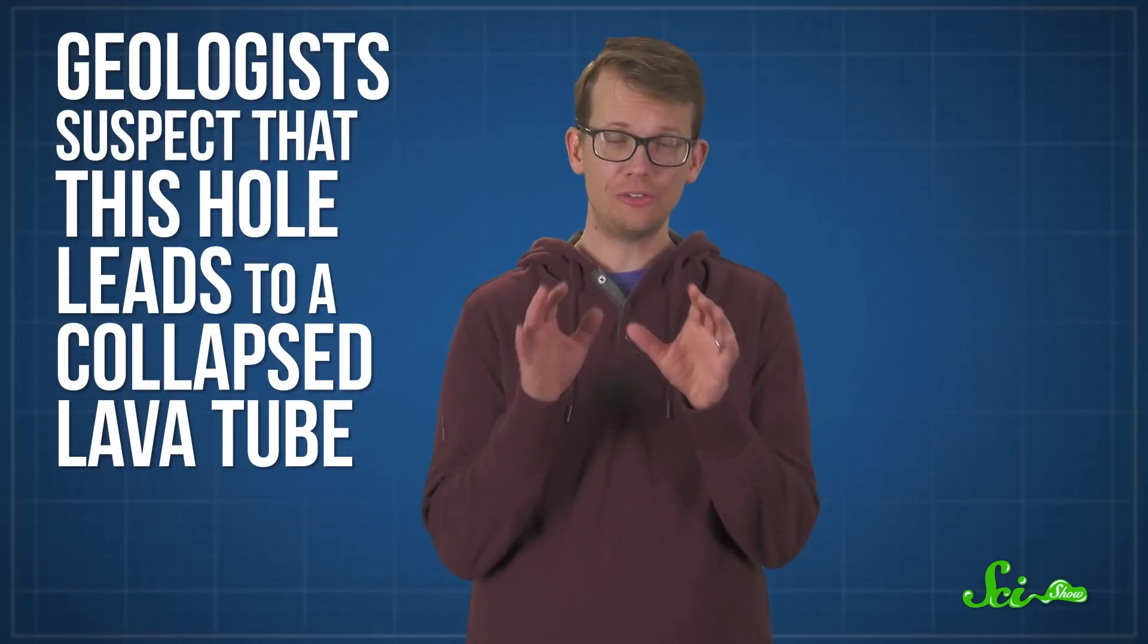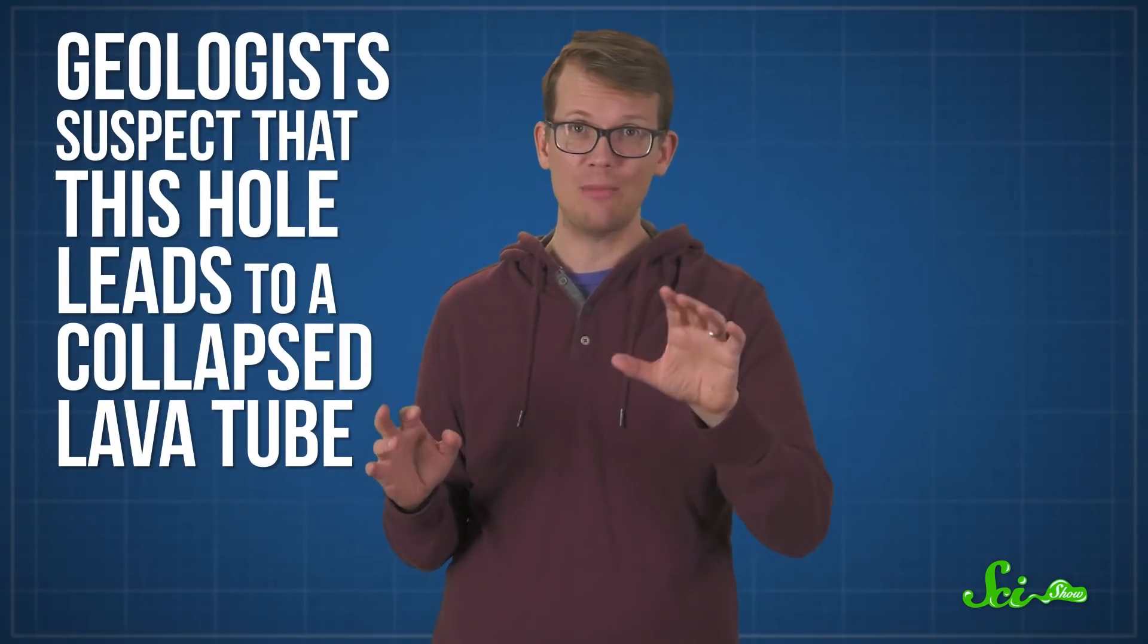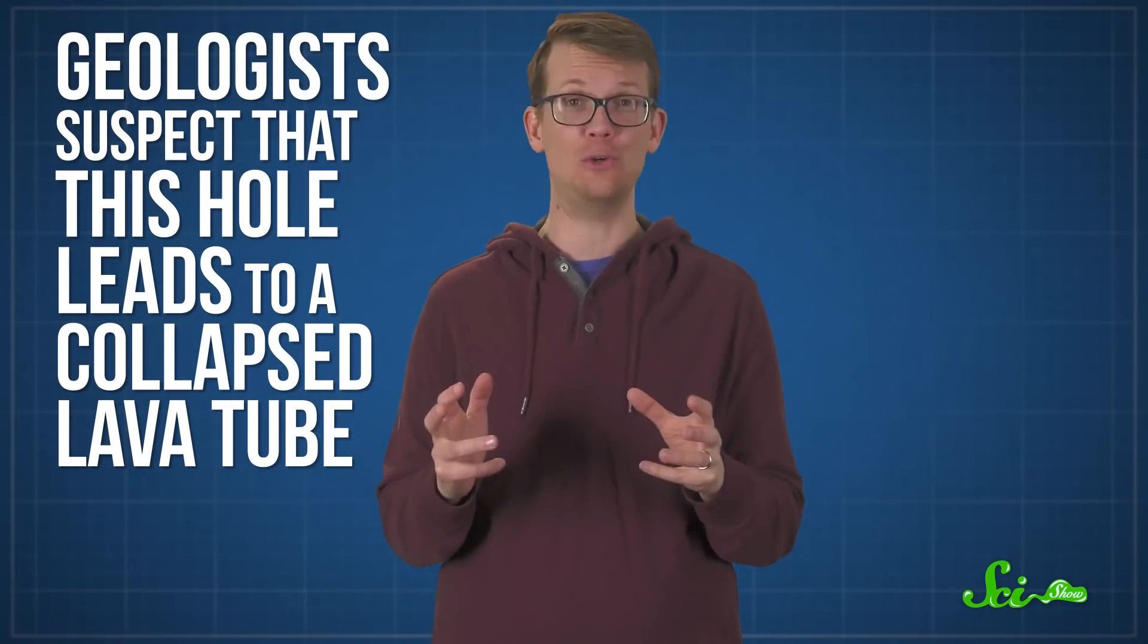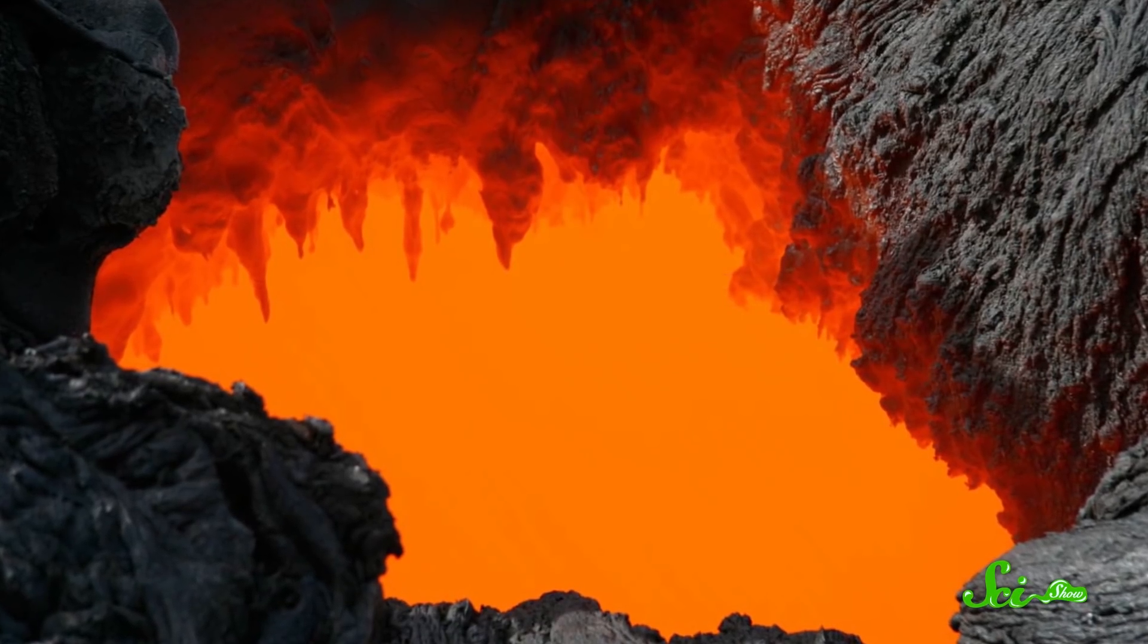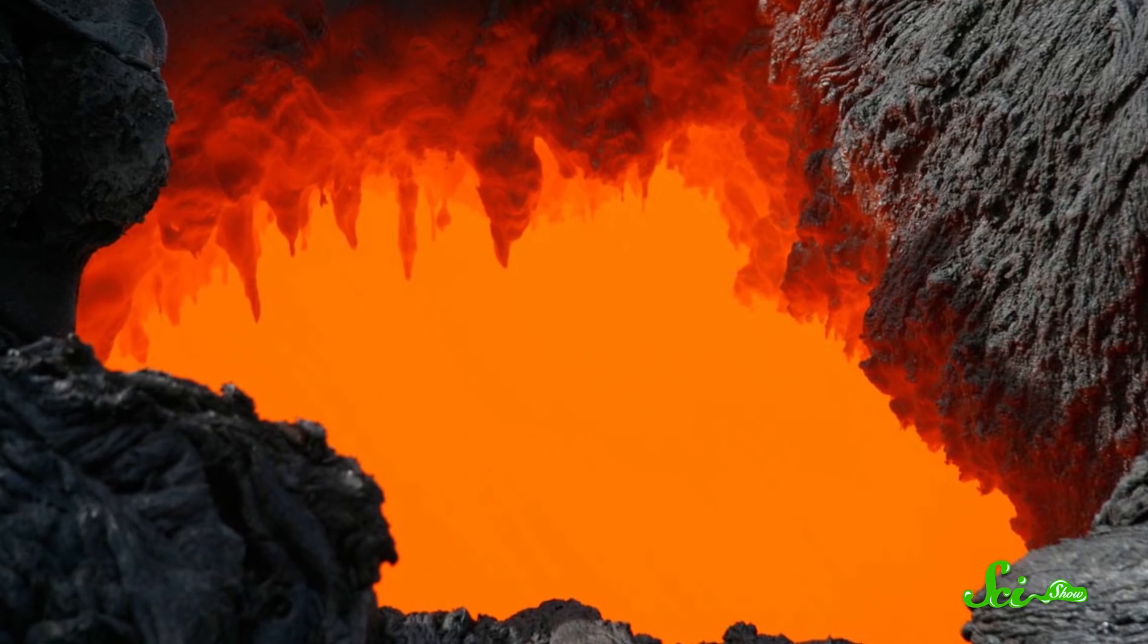Geologists suspect that this hole, which is not very big, isn't just some random opening in the ground. Instead, they think it leads to a collapsed lava tube. Lava tubes are natural tunnels that form as lava flows down the slopes of a volcano. The lava's outer layer cools into a hard crust, but the inner layers are still molten, and they continue to flow downhill.